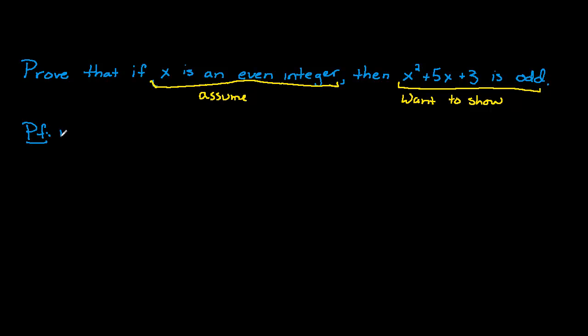We begin by assuming that x is an even integer. Now, recall that the form of even integers is 2k. So x equals 2k, where k is some integer.